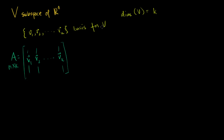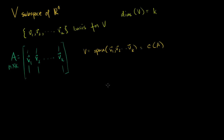Now, what's another way of expressing the subspace V? The basis for V is spanned by these basis vectors, which are the columns of A. So V is equal to the span of v1, v2, all the way to vk — and that's just the same thing as the column space of A.